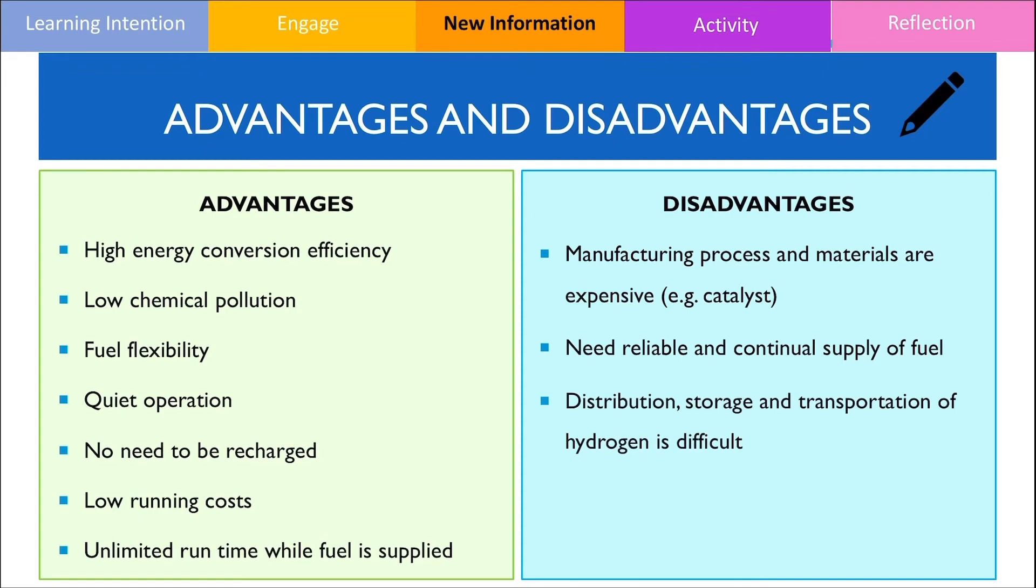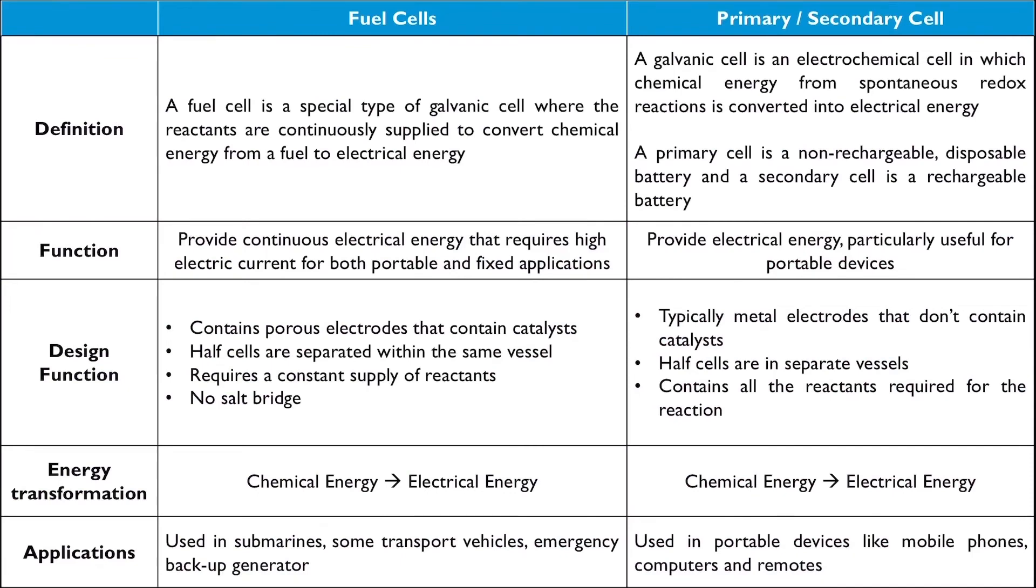Lastly, another limitation with fuel cells is that it produces direct current and is unable to produce alternating current. On the next slide, I've got a table that conveniently summarises the differences between a fuel cell and a galvanic cell. I would encourage you to thoroughly study the contents on this table as you're typically asked questions that ask you to compare the similarities and differences between fuel cells and a primary cell or a secondary cell.